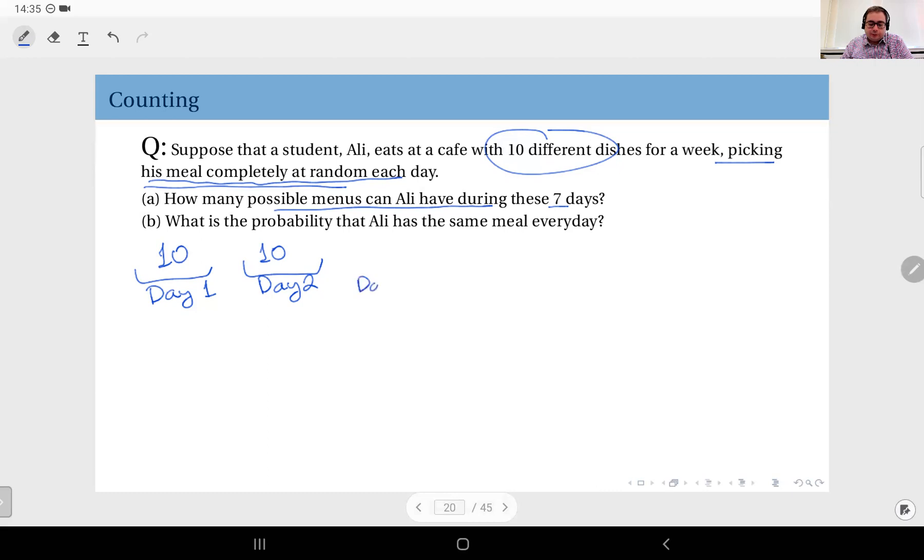Similarly, day number three, again, 10 options, day number four, five, six, and day number seven, he has 10 possible options. Now we are going to multiply these to obtain 10 to the power seven total number of possible menus.